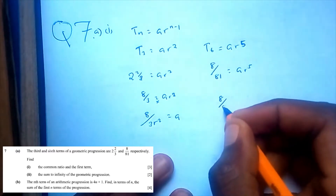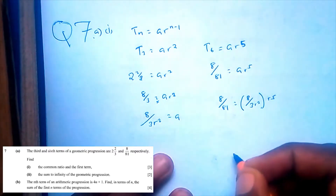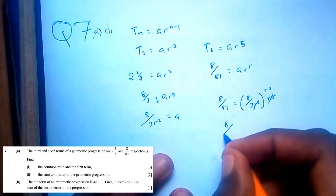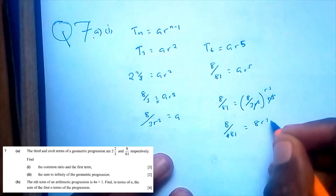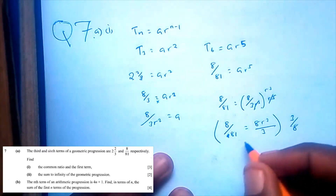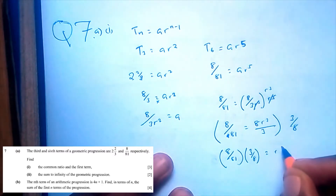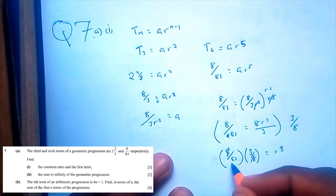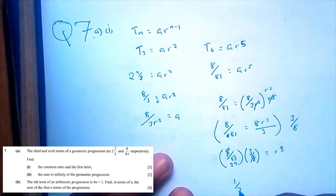Substituting gives 8/81 = (8/3R²) × R⁵ = (8/3)R³. Multiplying both sides by 3/8 gives R³ = (8/81) × (3/8). The 8s cancel, and 3/81 = 1/27, so R³ = 1/27.